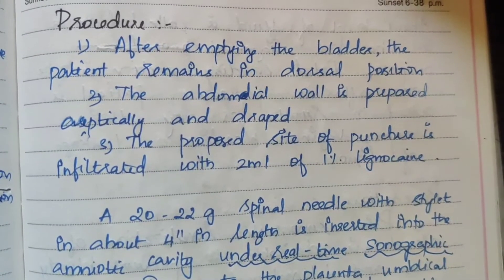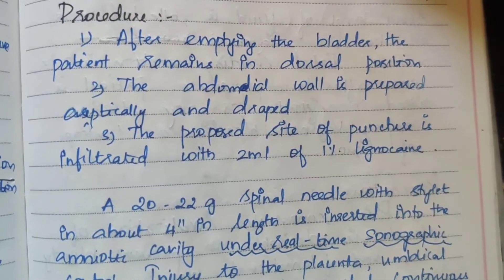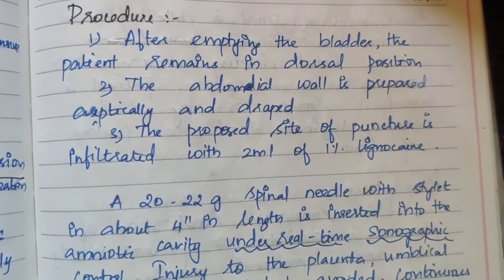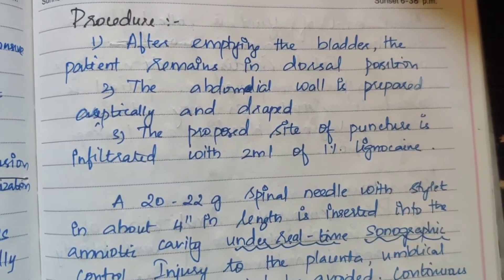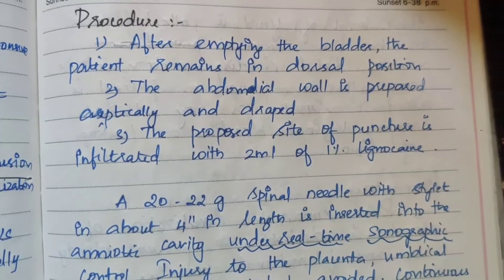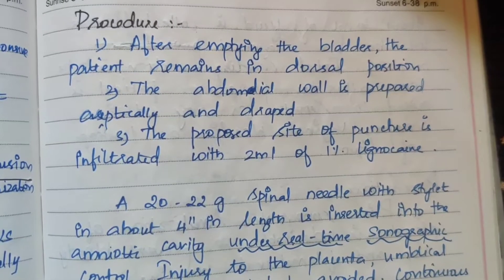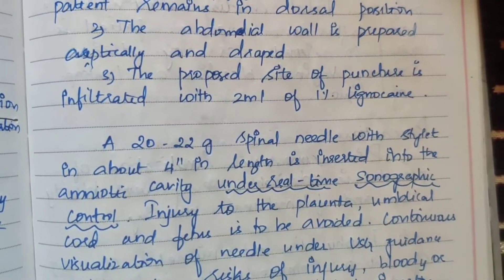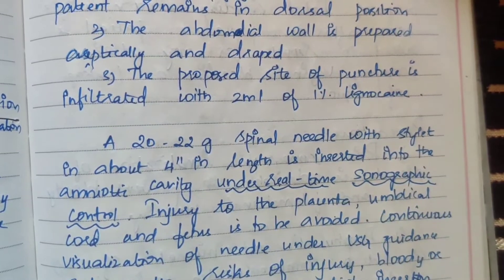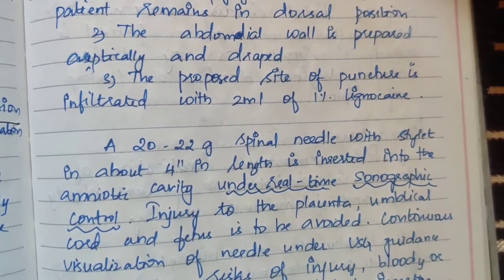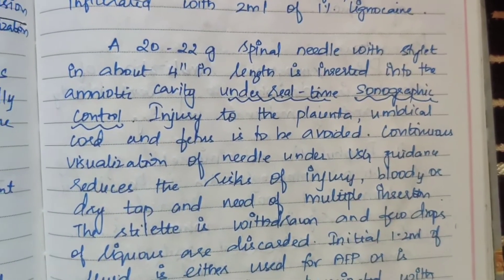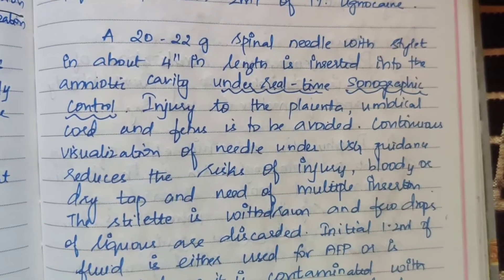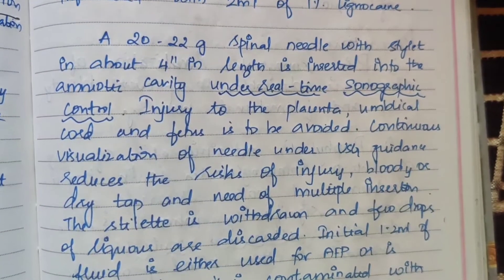Procedure: the patient remains in the dorsal position. The abdominal wall is prepared aseptically and draped. Since this is an invasive procedure, the proposed site of puncture is infiltrated with 2 ml of 1% lignocaine as a local anesthetic so the patient does not feel pain.